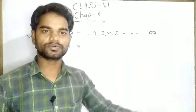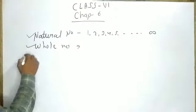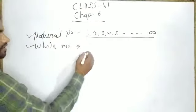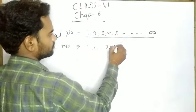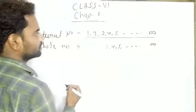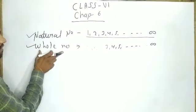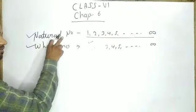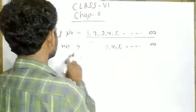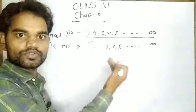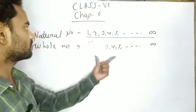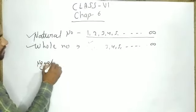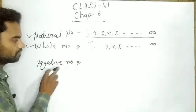What are the whole numbers? If we include 0 in the natural numbers — that is 0, 1, 2, 3, 4, 5, 6, 7 up to infinite — then all the natural numbers along with 0 are called whole numbers. The definition of natural numbers: all the counting numbers from 1 to infinite. All the natural numbers including 0 are called whole numbers.